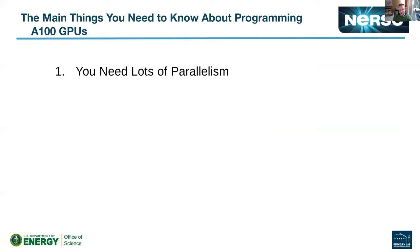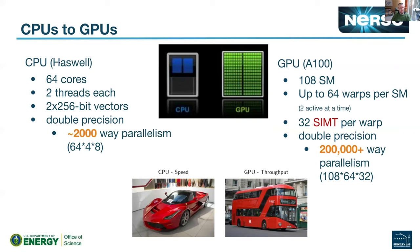The first and most important concept is that you need lots and lots of parallelism. Comparing the CPU architecture on a Cori Haswell system to the GPU architecture on Perlmutter, you're going from 32 cores on Haswell to what you might consider 108 streaming multiprocessors (SMs) on a GPU socket. Each Haswell core can handle two hyperthreads, which is roughly equivalent on the GPU to having 64 warps available per SM.